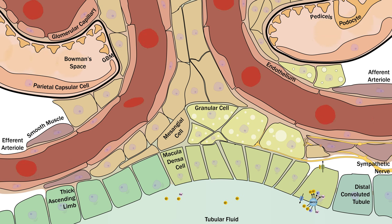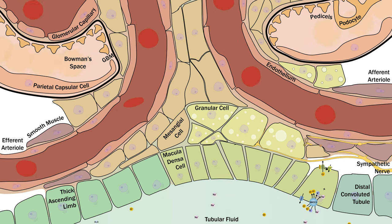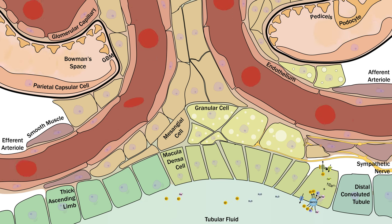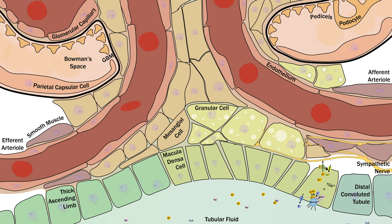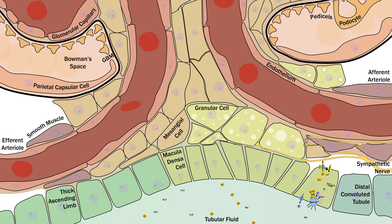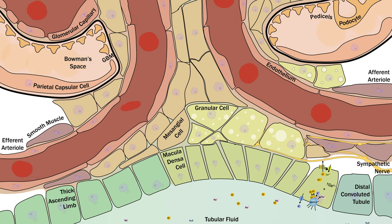At the end of the thick ascending limb, there is a cluster of about 10 to 20 specialized tubular epithelial cells per nephron known as the macula densa. Here the distal nephron loops around to the vascular hilum of its own glomerulus, forming the juxtaglomerular apparatus. This site performs two important functions: tubuloglomerular feedback, which regulates vascular tone of the afferent arteriole in response to distal solute — allowing short-term autoregulation of individual nephron GFR — and the secretion of renin. The juxtaglomerular apparatus consists of three major cell types: the macula densa, extraglomerular mesangial cells, and the granular or juxtaglomerular cells, which release renin.